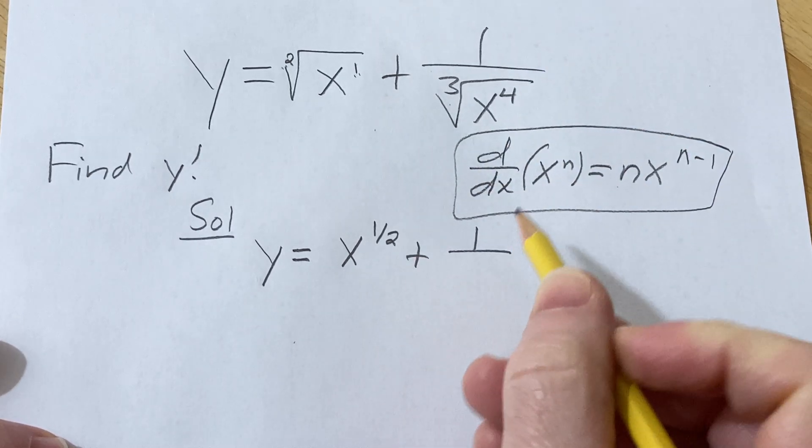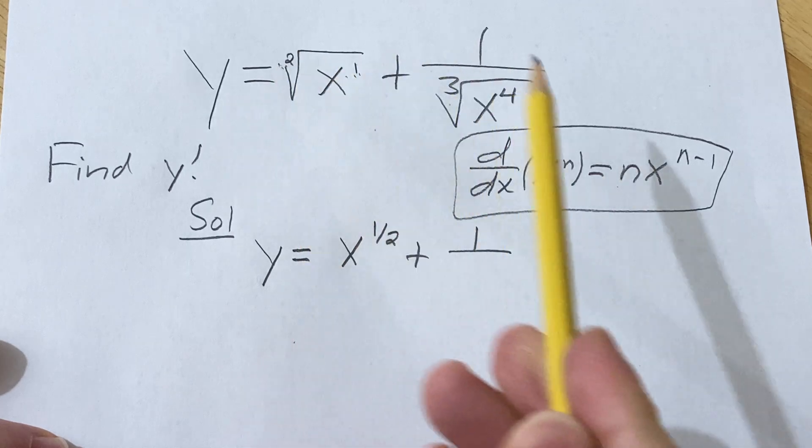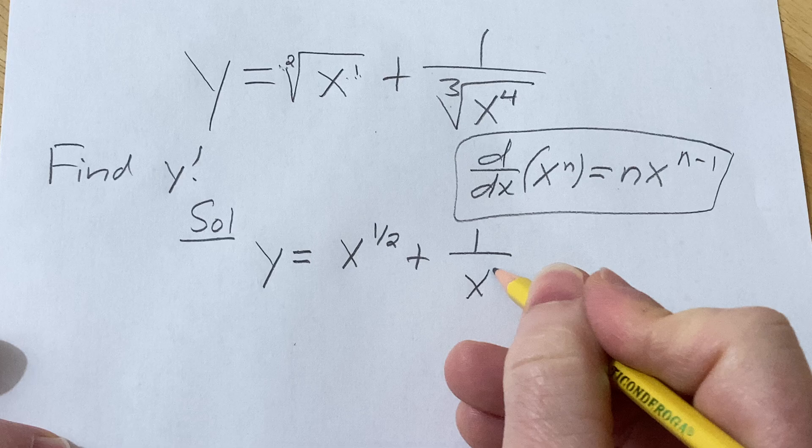This is plus one over, same procedure here, just like with the square root how it was one over two. Here it's going to be four over three. So this would be x to the four thirds.